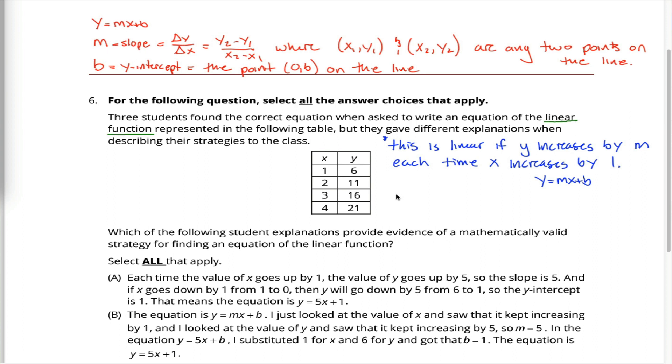While I'm here, it might be worth pointing out that if the values of y didn't increase by 5 each time x increased by 1, but instead got multiplied by 5 each time x increased by 1, so instead of 6, 11, 16, and 21, maybe they were 6, and then 30, and then 150, and then 750, hypothetically. If these were the y-coordinates, they're not, but if they were, we wouldn't have a linear function. We'd have what's called an exponential function.